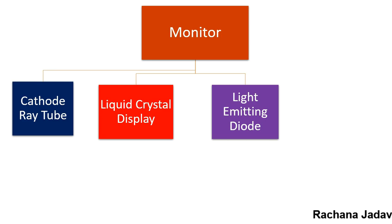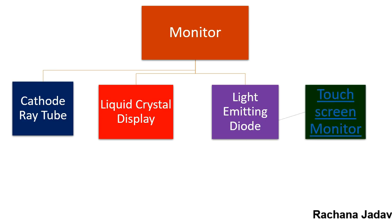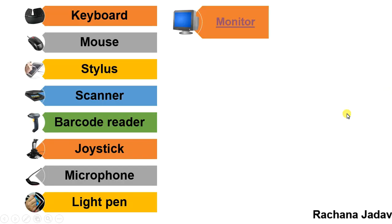LCD is light in weight and thinner, but consumes more electricity compared to LED. LCD is also available in mobile phones. The touch screen monitor — you can see these at railway stations, malls, banks, and especially ATM machines where touch is used.